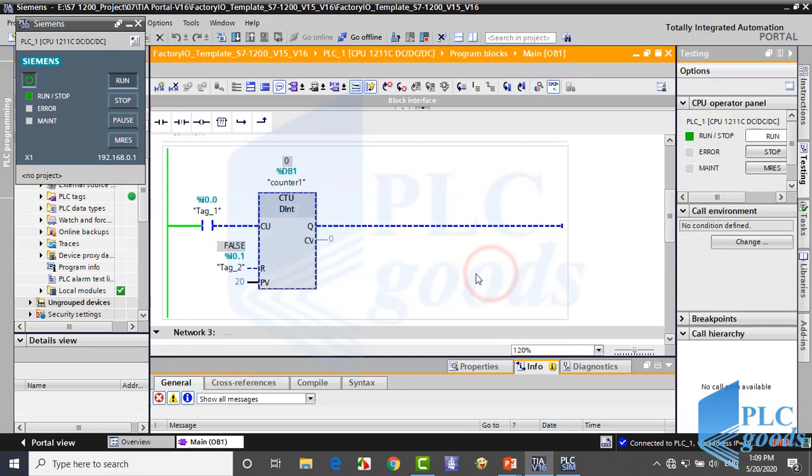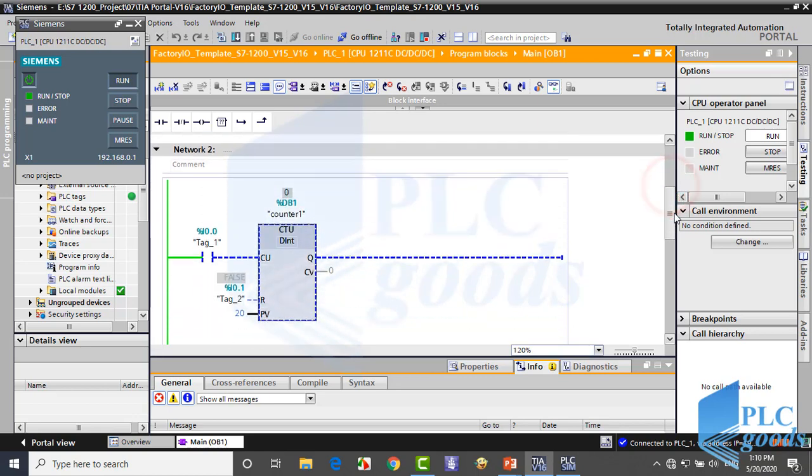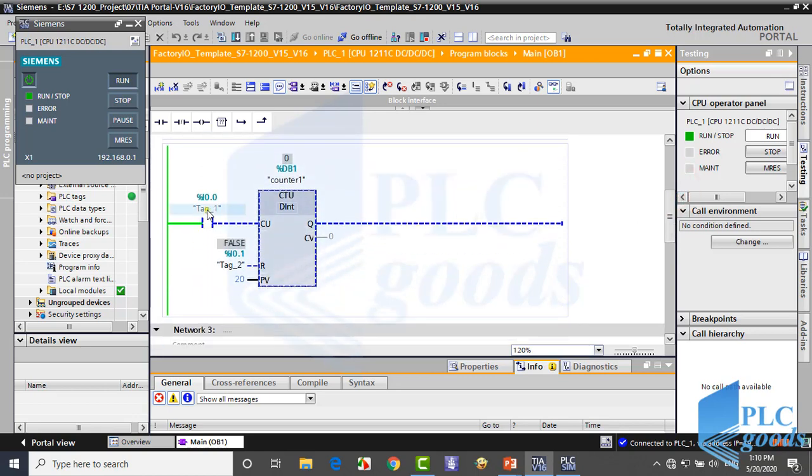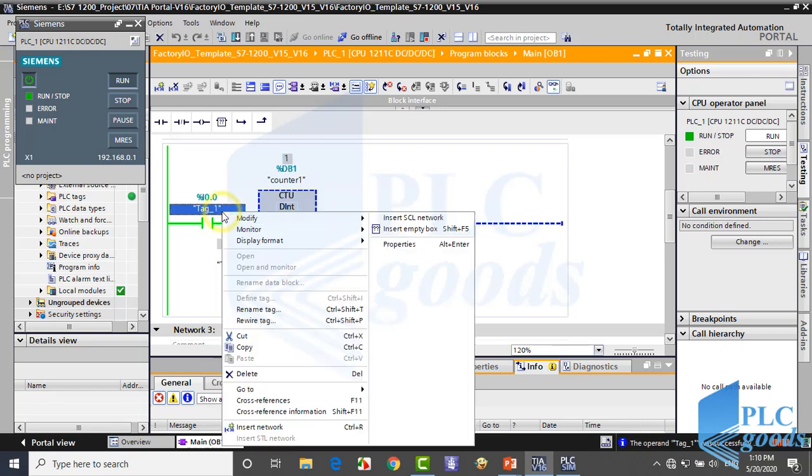As usual, to change an input of my virtual PLC, I must use SIM or force table. But here, because of this block, I can right click on every PLC address and modify their values to 1 or 0. Let me do this modifying with Ctrl+F2 and Ctrl+F3 shortcuts.